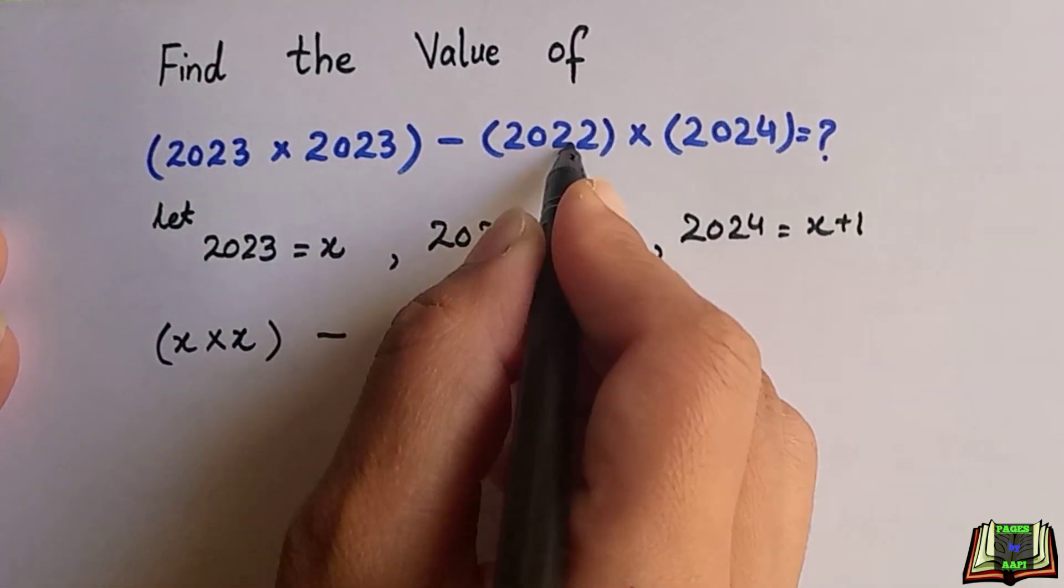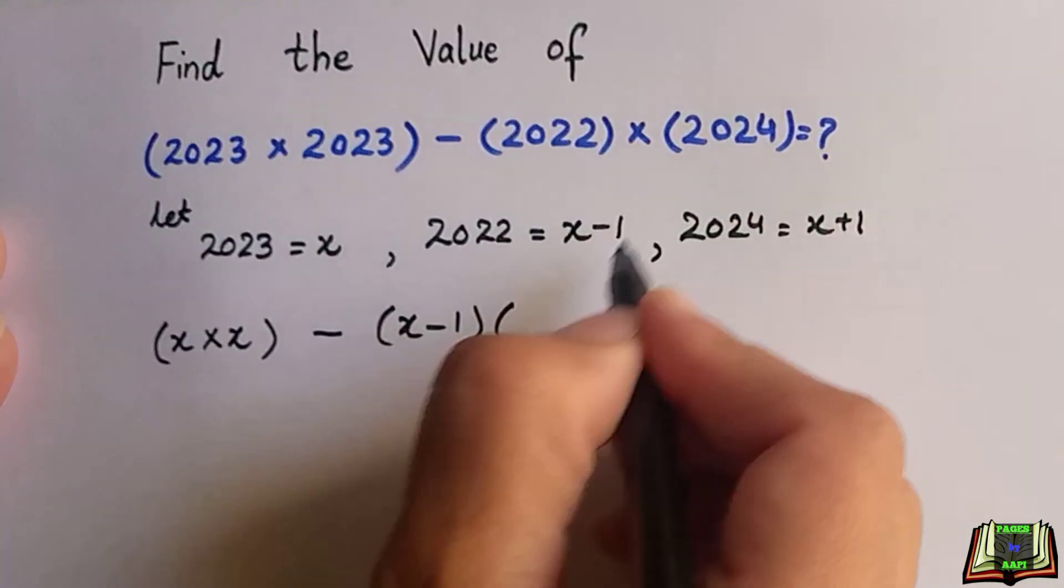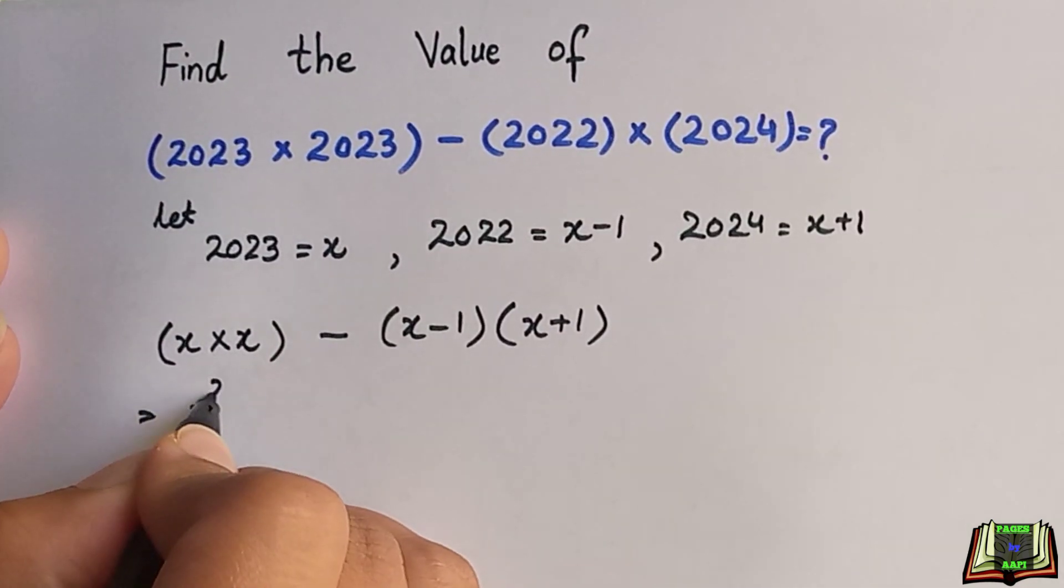By putting in the equation, the equation will become x times x minus, this is equal to x minus 1, and 2024 is x plus 1.